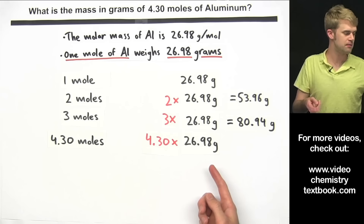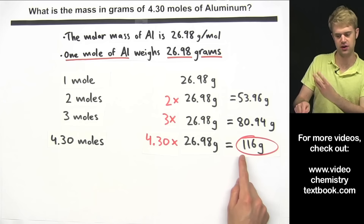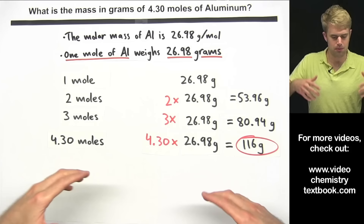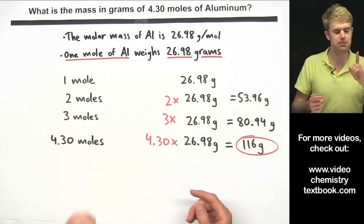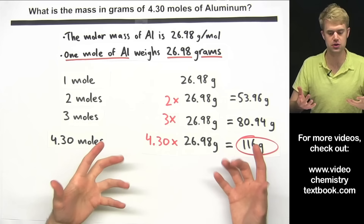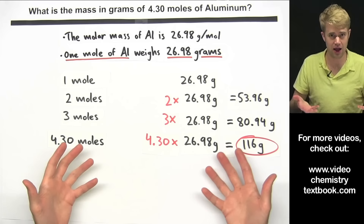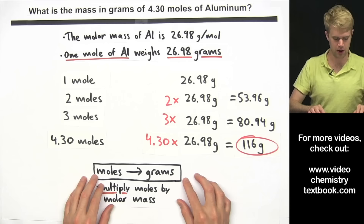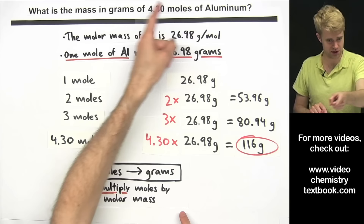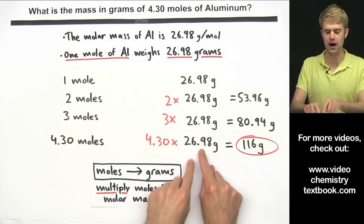That gives us 116 grams, rounded to three significant figures. So basically, all I'm doing here is thinking through the problem, keeping in mind that the molar mass tells me how much one mole weighs, and then multiplying that by however many moles I have. To sum up: when converting from moles to grams, multiply moles by the molar mass.